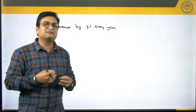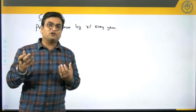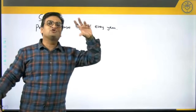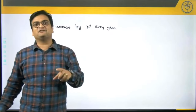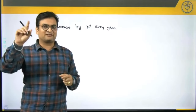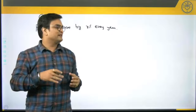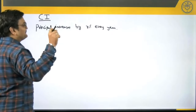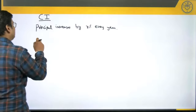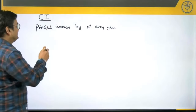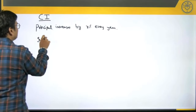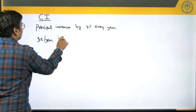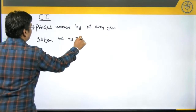For example, if you have taken a loan at 10 percent, your loan amount will not stay the same 6 lakh rupees — every year it is going to grow by 10 percent of the current value, not 10 percent of the original 6000. That is one more difference between SI and CI: principal increases by R percent every year, so if the rate of interest is constant, the interest per year also increases by R percent.